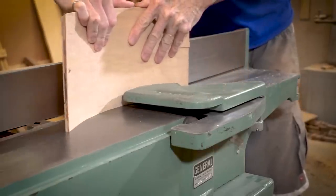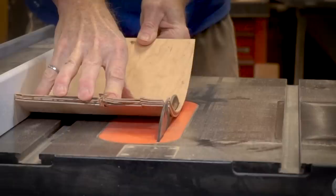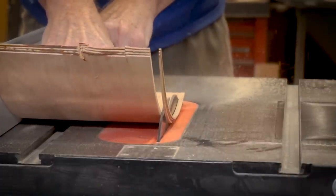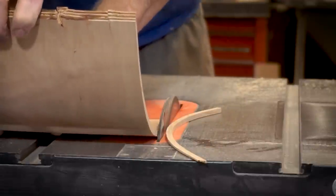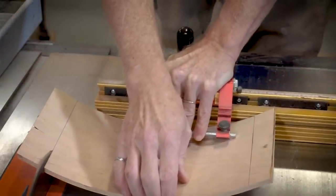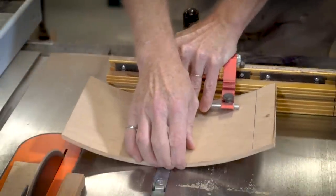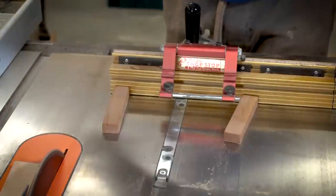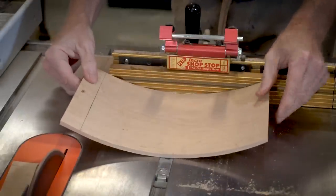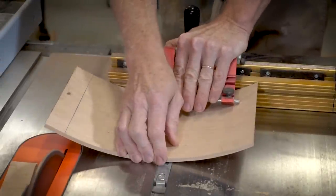Now I'm using the jointer to get a nice straight edge and then I'll run that against the fence on the table saw to clean up the other edge. It's a little unorthodox to cut a curved piece on the table saw like that so you just need to be very careful. I have a couple of pieces of wood under each end of the curve to hold it in the right position so that I can cut the ends so that they are vertical when they're mounted on the box.